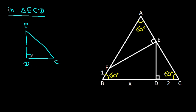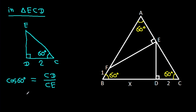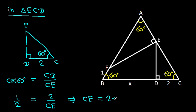This angle is 90 degrees, this angle is 60 degrees, and CD is 2. So cos 60 degrees equals CD over CE. Since cos 60 degrees is 1 over 2, we get 1/2 equals 2 over CE. Therefore CE equals 2 times 2, which is 4.